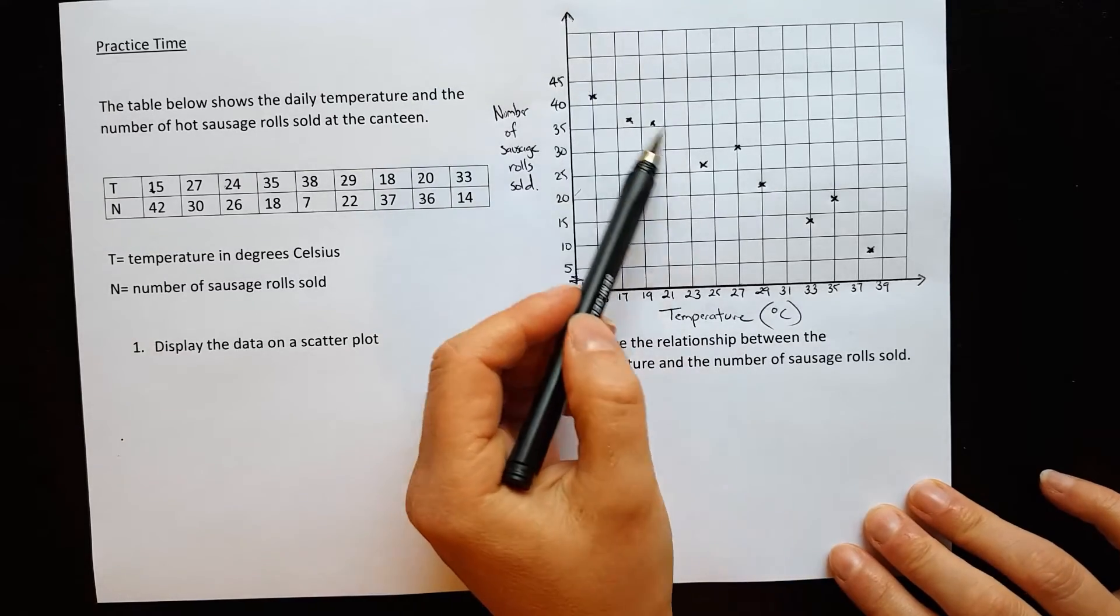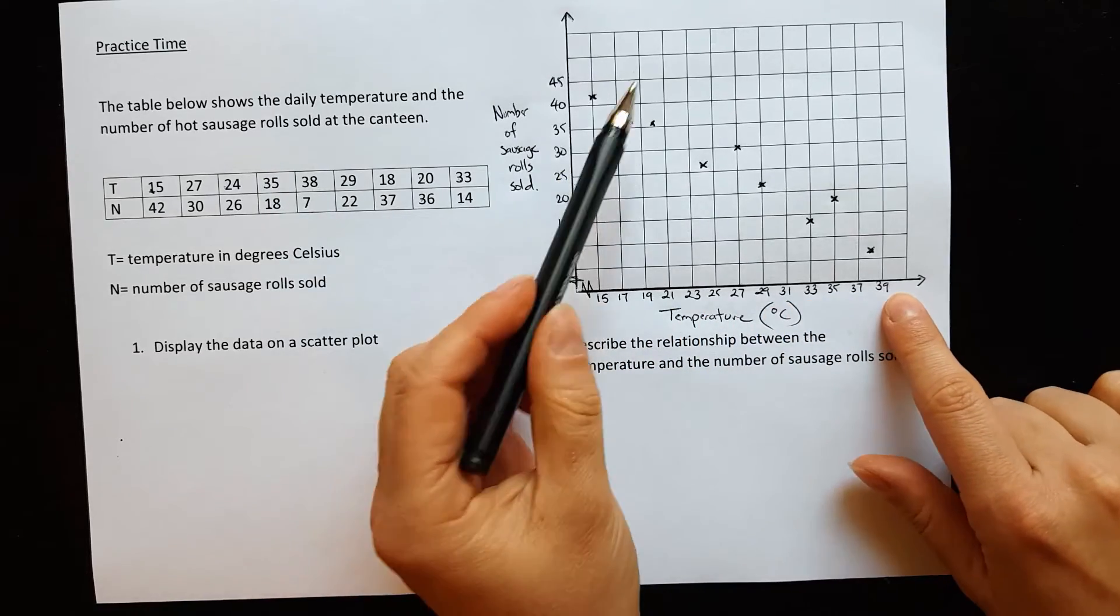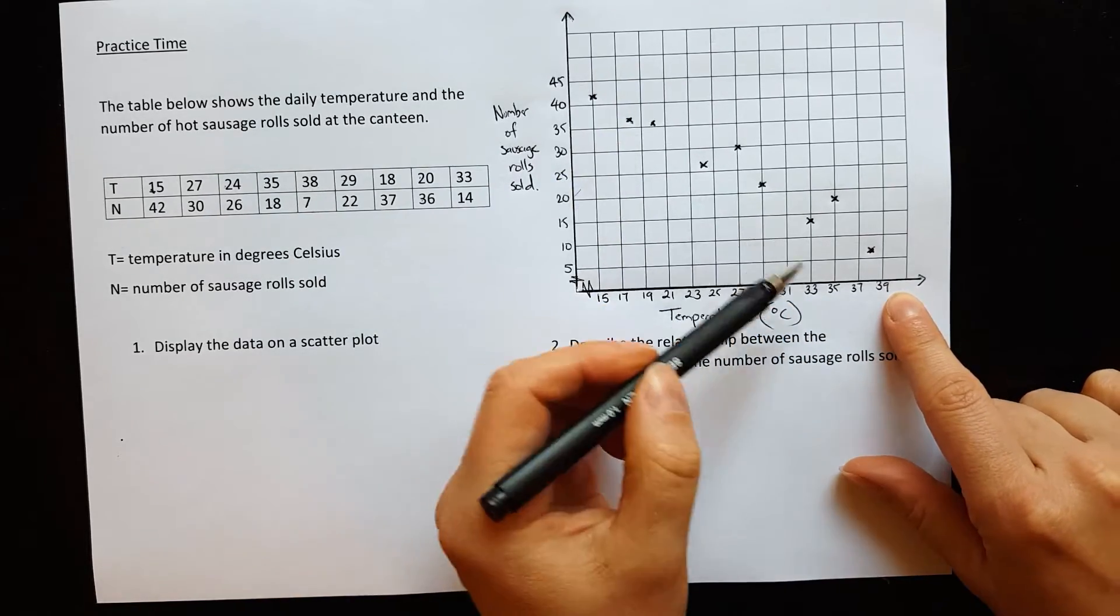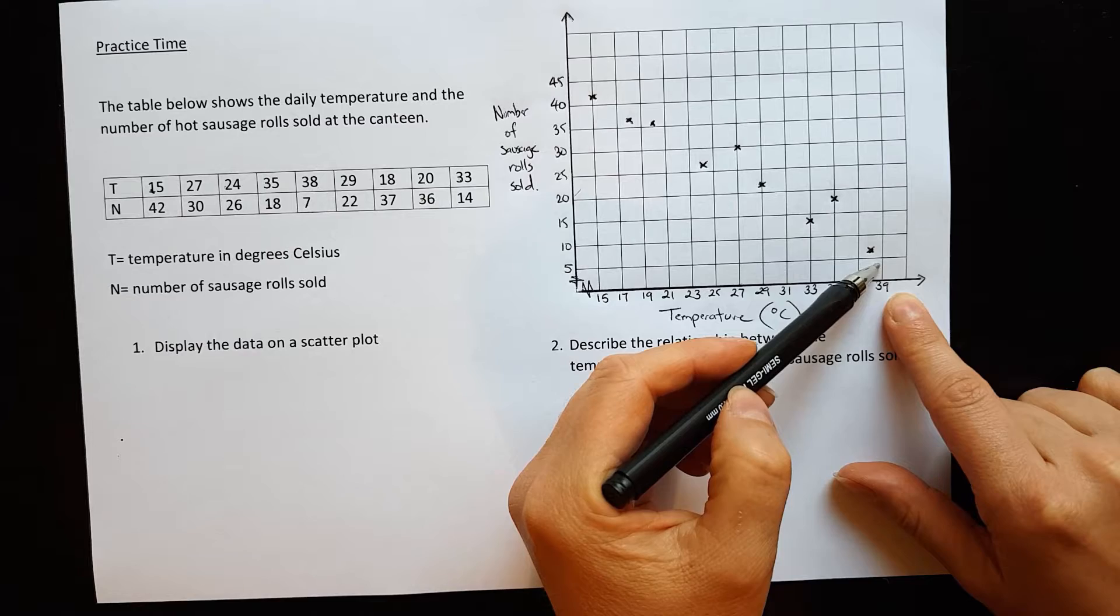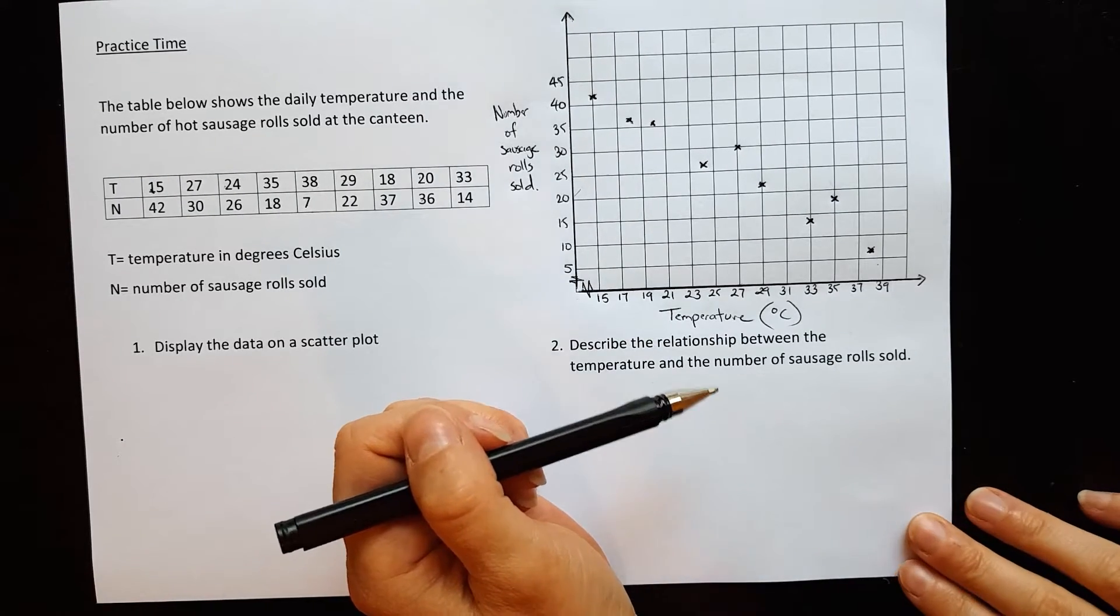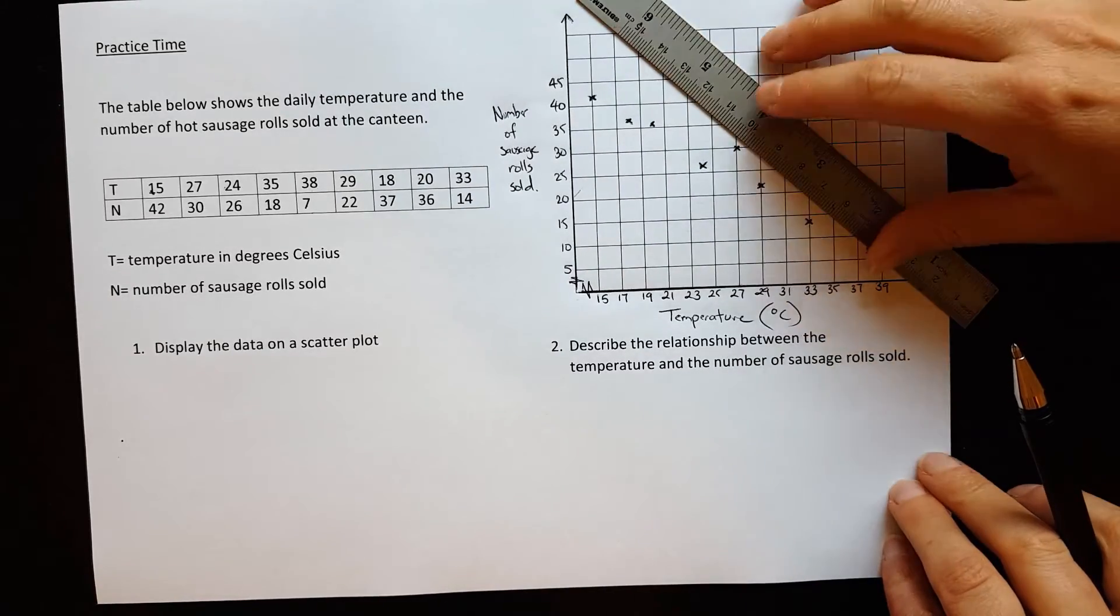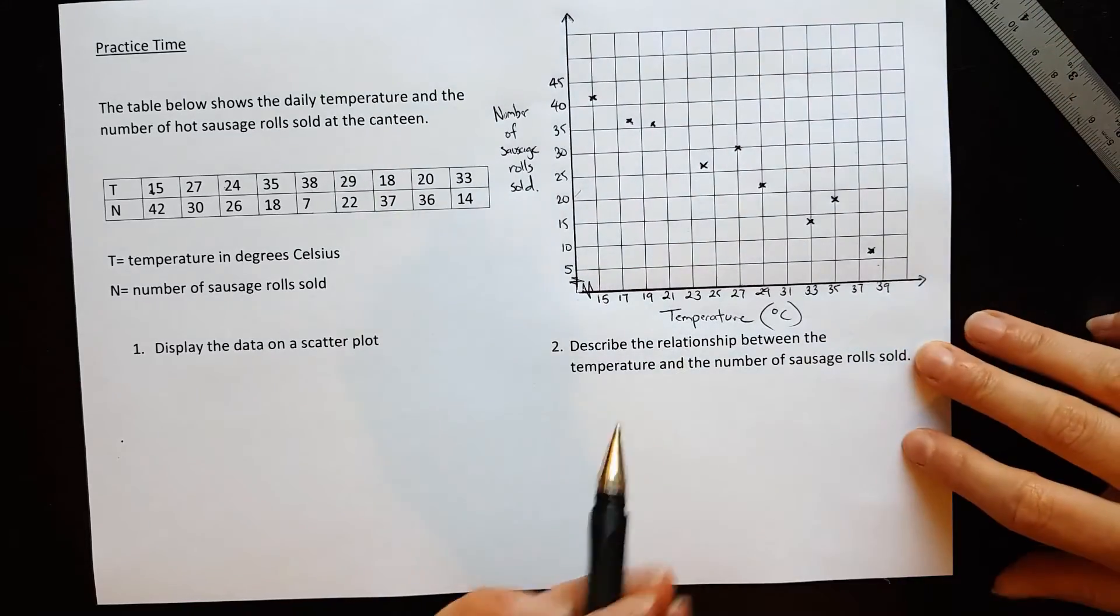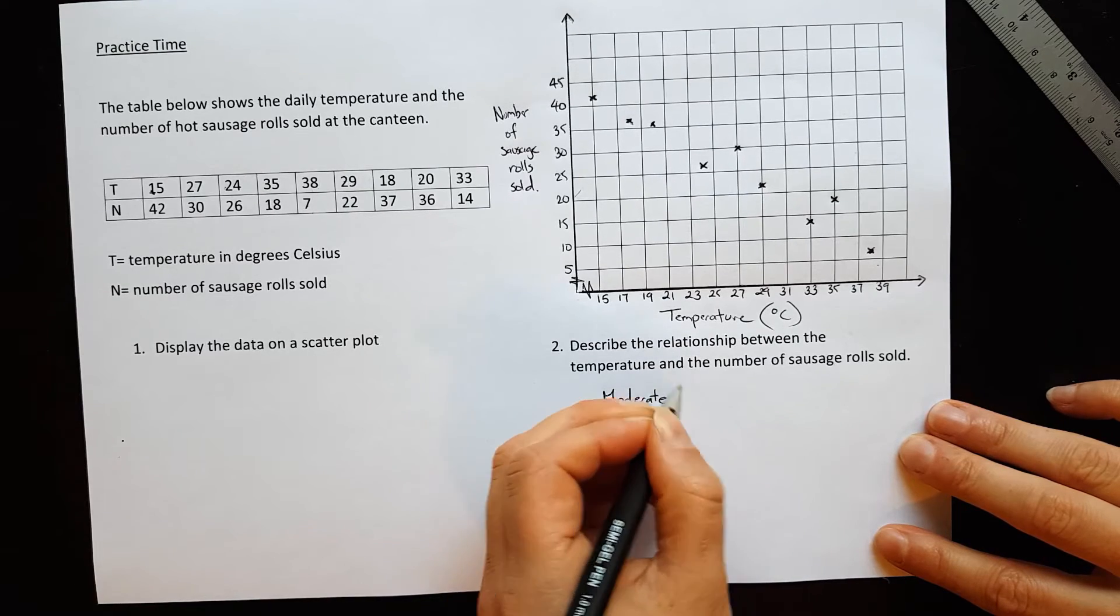So you can actually see there is kind of a linear relationship here. The warmer the temperature is, you seem to sell less sausage rolls. So on cold days you sell more sausage rolls in general, then on the warm days where you would sell less sausage rolls. I guess people don't want to eat hot food when they're hot. So if we describe the relationship between the temperature and the number of sausage rolls sold, I would say that's still quite a strong relationship there. Well, maybe we should call that moderate because there's a little bit of gap. Maybe we'll say that's a moderate relationship, moderate negative.